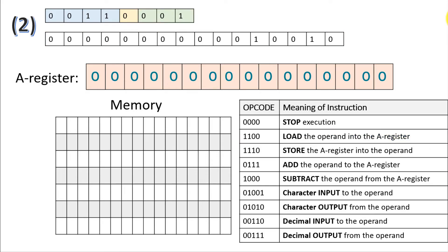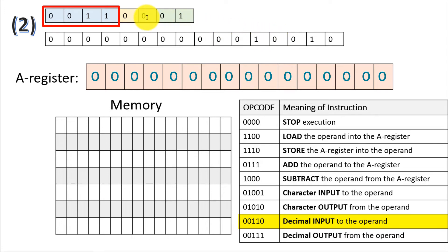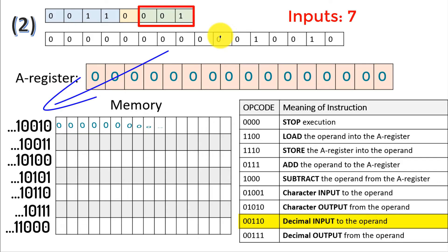In the next instruction, we have 00110001. This means that we would want to input a decimal to the operand. The addressing mode specifier indicates direct mode addressing, which means that we're going to take an input from the user and put it at this memory location. We go to this memory location and store the value given to us by the user.